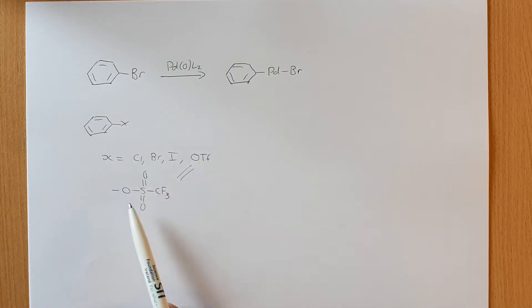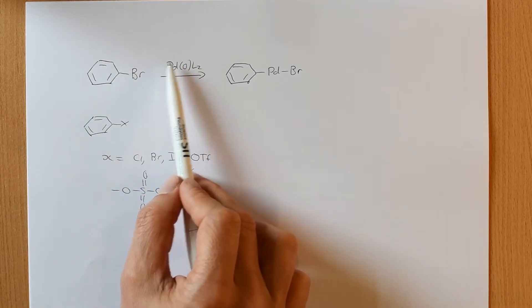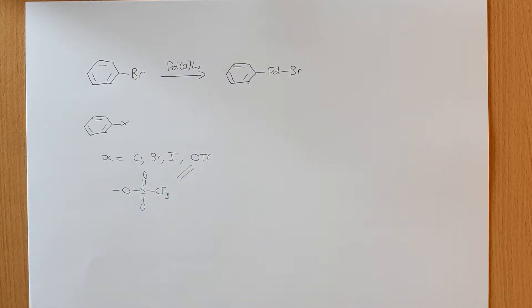So any of those four will work, at least in theory, as halogens to allow for oxidative insertion. In some cases it works better, in some cases it works poorly. So there are two factors.